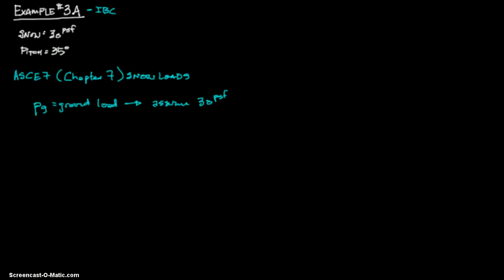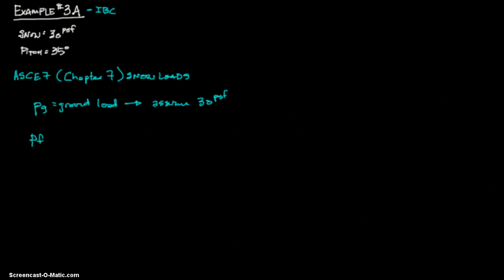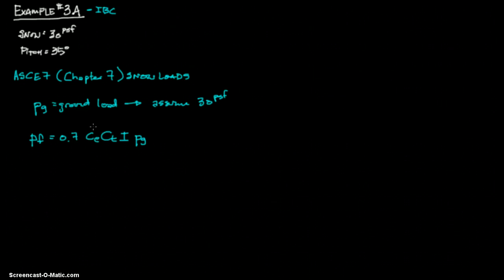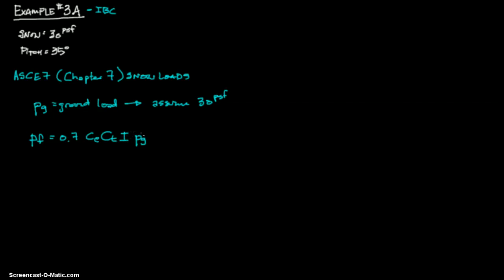Then you move on to a flat roof snow load, which is PF. If you have a flat roof snow load, the equation for this is 0.7 times CE times CT times I times PG. PG is this PG, and you say that and you'd be right, it gets a little bit more confusing.